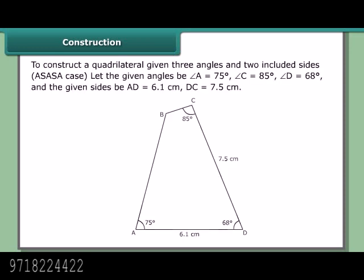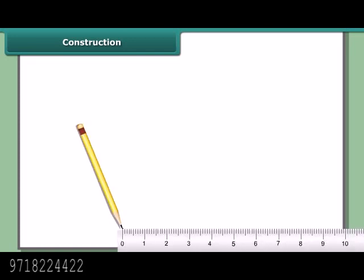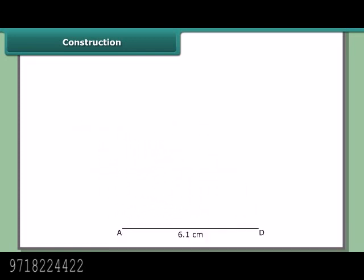Construction: To construct a quadrilateral given three angles and two included sides — the ASASA case. Let the given angles be angle A = 75°, angle C = 85°, angle D = 68°, and the given sides BA + D = 6.1 cm, DC = 7.5 cm. Here we can construct the quadrilateral directly without dividing it into two triangles. Construct AD = 6.1 cm.